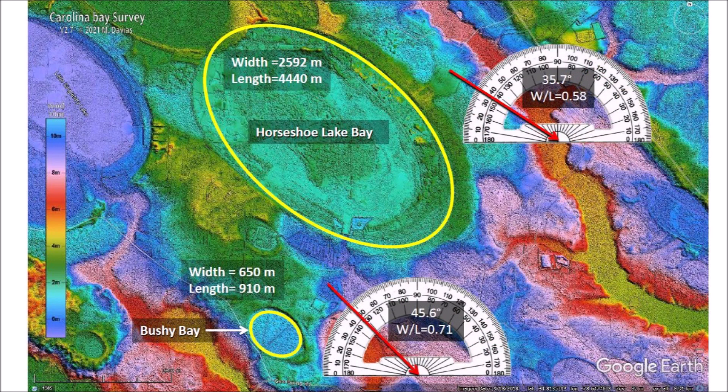Horseshoe Lake Bay can be fitted with an ellipse with a width of 2,592 meters and a length of 4,440 meters. The width-to-length ratio is 0.58 and it corresponds to an impact angle of 35.7 degrees. Bushy Bay has a width of 650 meters and a length of 910 meters. Even though it looks small, it is almost 1 kilometer long. The width-to-length ratio of Bushy Bay is 0.71, which corresponds to an impact angle of 45.6 degrees.